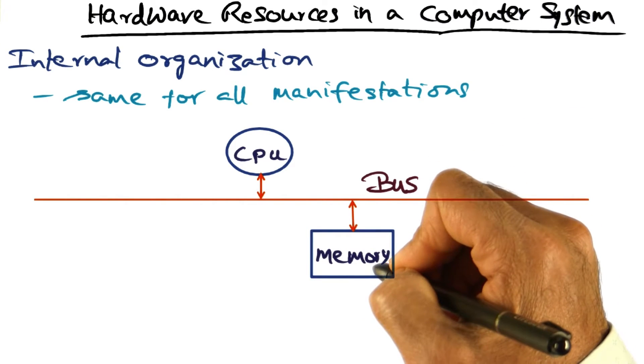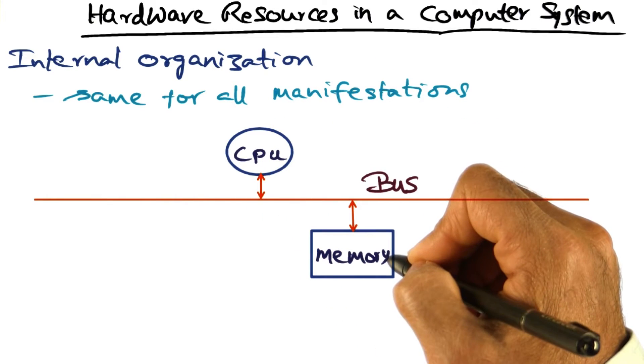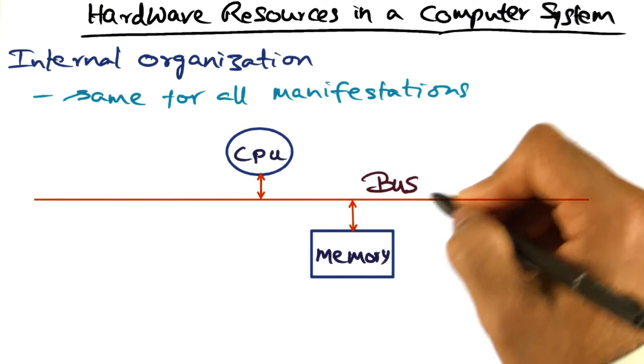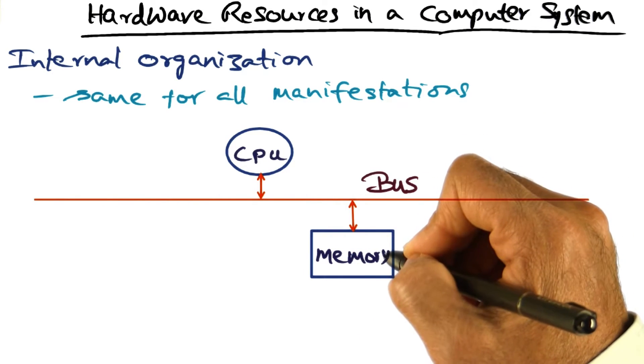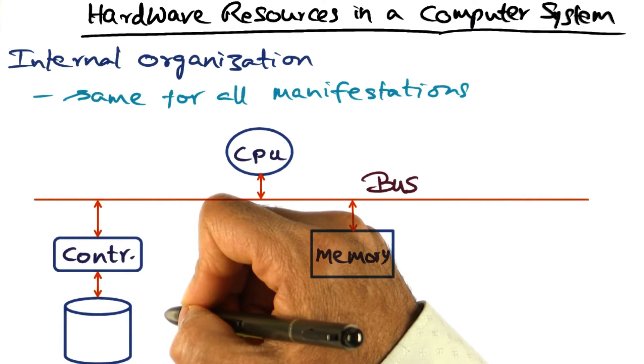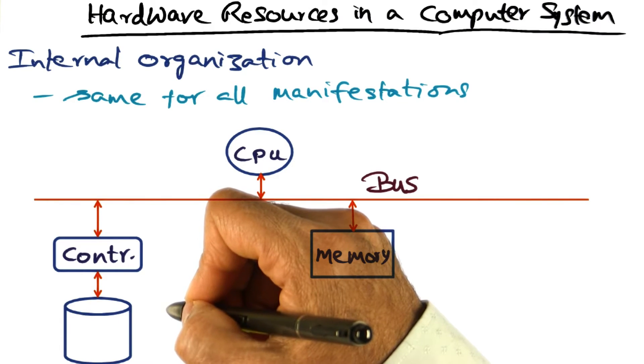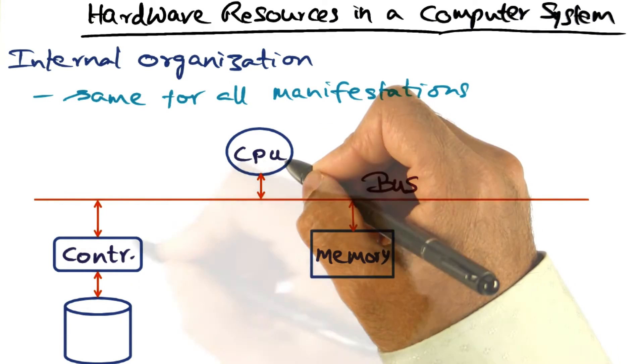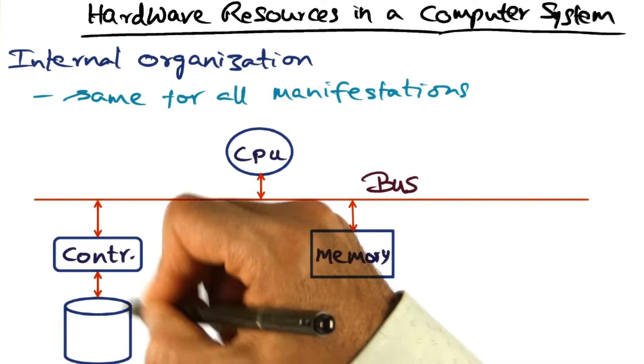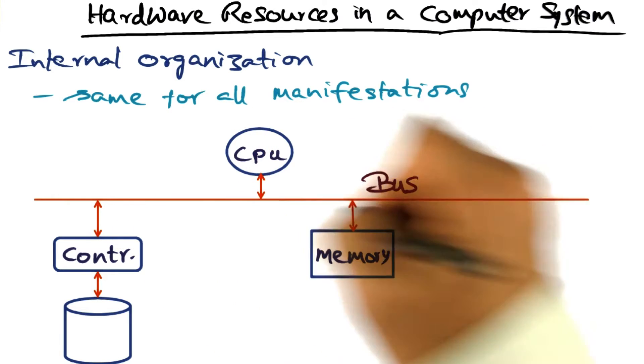You've got memory that has the instructions and data that is needed for the CPU to execute. The CPU can use this conduit, namely the bus, to access the memory. You need storage for persistence of files and other data that you produce during the computation. Once again, the CPU can access stuff on the storage device through a controller that is also connected to this conduit.